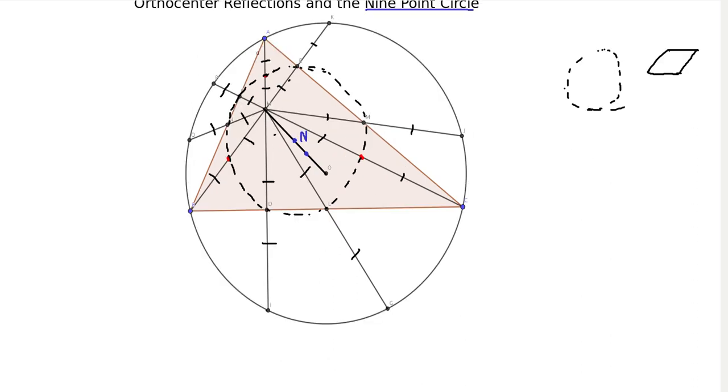Now another thing is that, is the diameters, right? The midpoints of the sides and the midpoints of, sort of, from vertex to orthocenter, they are the diameters, they are some diameters of the nine point circle. So, maybe you can figure that out yourself. I just need to state that before the next video.